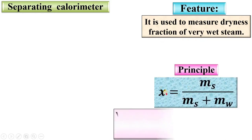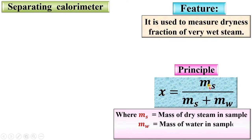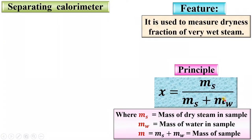Now let's see the principle. The dryness fraction of steam x is equal to ms upon ms plus mw, where ms is the mass of dry steam in the sample, mw is the mass of water in the sample, and ms plus mw is the total mass of the sample, denoted by small m. If you are able to find the mass of the steam and mass of the water in the sample of steam, then definitely you can find the dryness fraction of the steam using this formula.